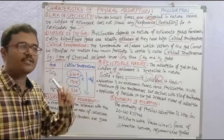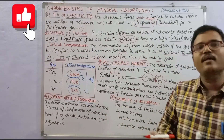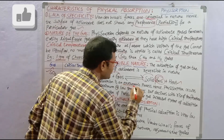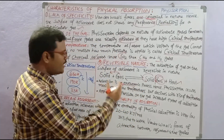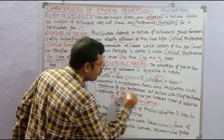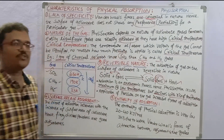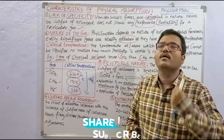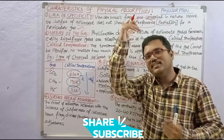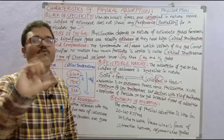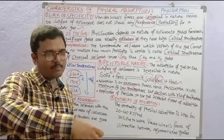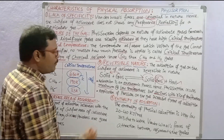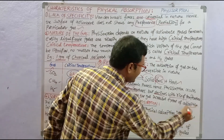Physical adsorption has a reversible character and disrupts easily. Since adsorption is an exothermic process, physical adsorption occurs at a maximum at low temperatures but declines with a rise in temperature. When temperature increases, gas molecules gain energy and escape from the adsorbent surface. Application of pressure on the gas increases the extent of adsorption.